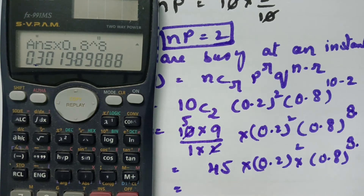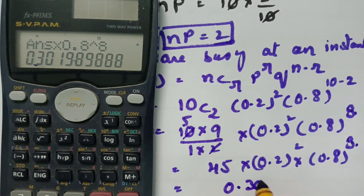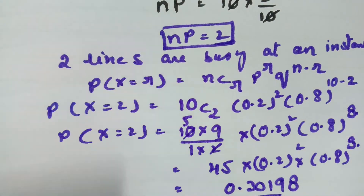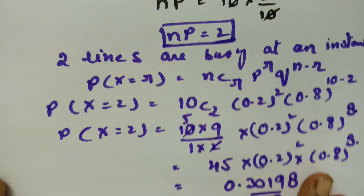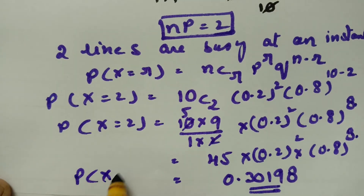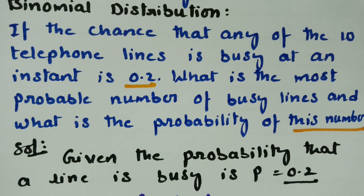The computed value here is 0.30198. This is the probability when two lines are busy.